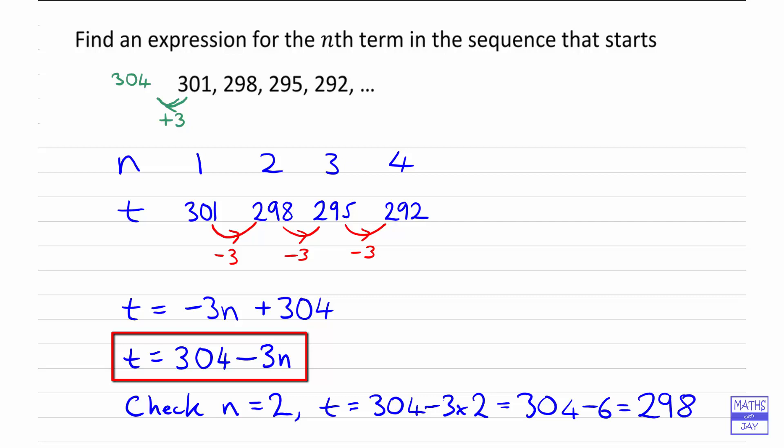Now we've got the formula, we can use it to work out any value in the sequence. We could work out the 10th term, the 100th term, the thousandth term, the 200th term, whatever you like. So for example, the 10th term would be 304 - 3 × 10, so that would be 304 - 30, so we'd get 274.